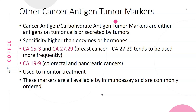Other cancer antigen or carbohydrate antigen tumor markers are either antigens on tumor cells or antigens secreted by tumors, with higher specificity than enzymes or hormones. CA 15-3 and CA 27-29 are used for breast cancer, with CA 27-29 used more frequently. CA 19-9 is used for colorectal and pancreatic cancer. These are generally used to monitor treatment — they must be elevated at diagnosis to serve as monitoring markers — and are all available by immunoassay.